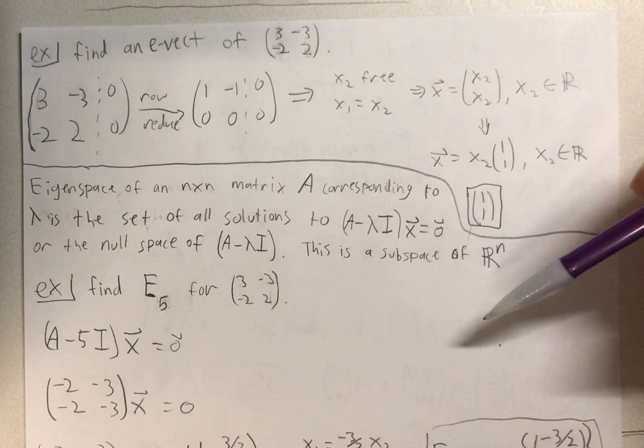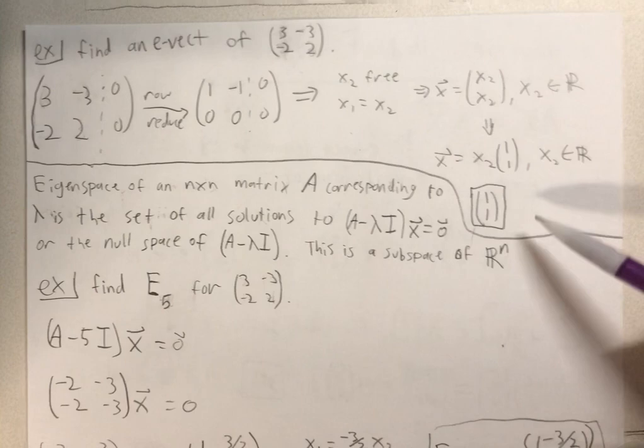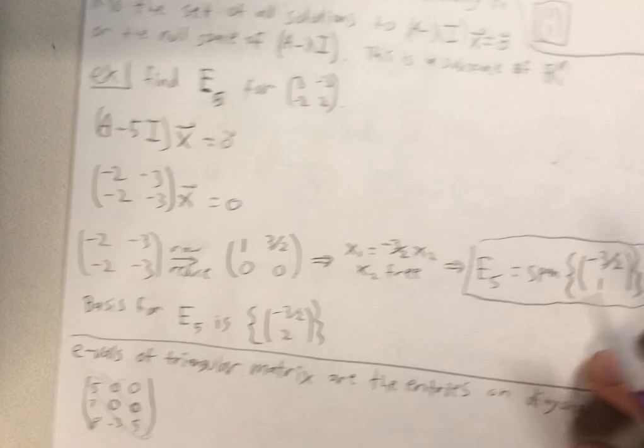I could have said 5, 5, 7, 7, a billion, a billion. There's an infinite number of solutions because X2 can be any real number.